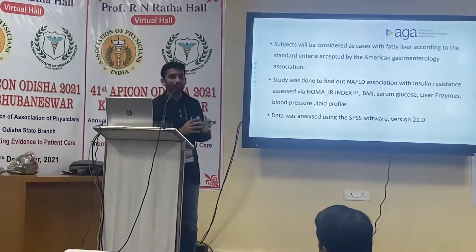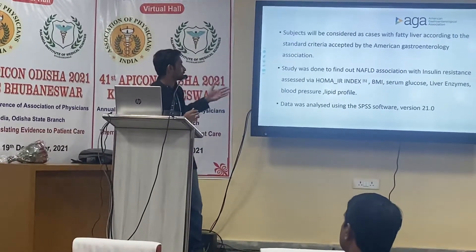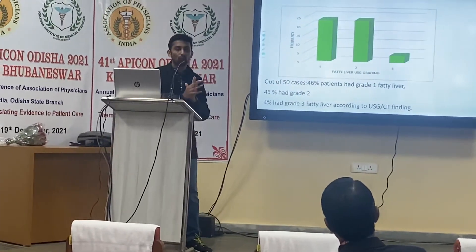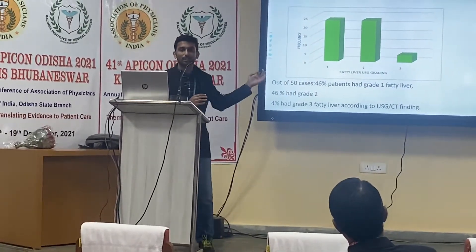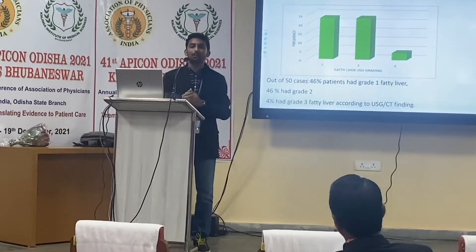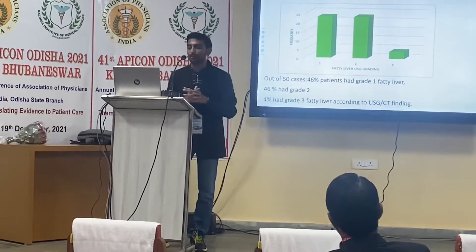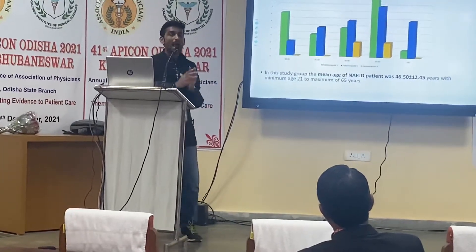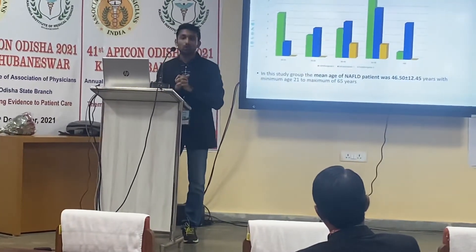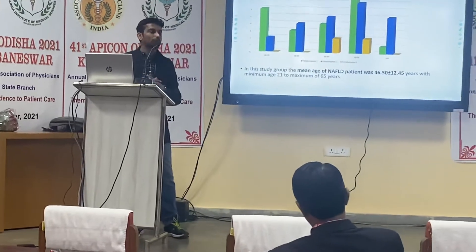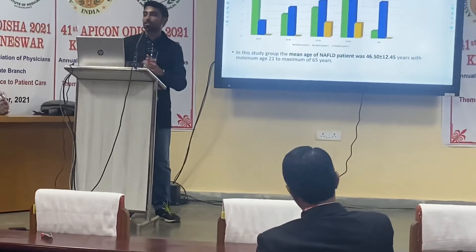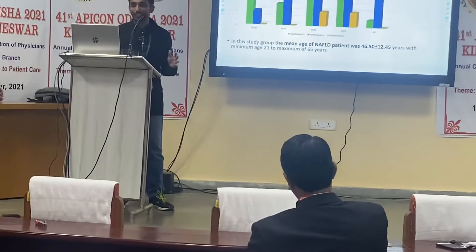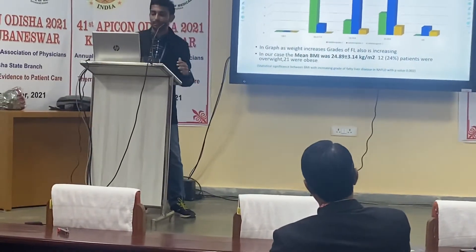Insulin resistance was measured using the HOMA index, BMI, serum glucose, and lipid profile. In the 50 cases, 46% of patients had grade 1 fatty liver, 46% had grade 2, and only 4% had grade 3 fatty liver. The mean age in our study was 46.5 years, with a minimum of 21 and a maximum of 65, showing that any age group from young to adult can be affected by non-alcoholic fatty liver disease.